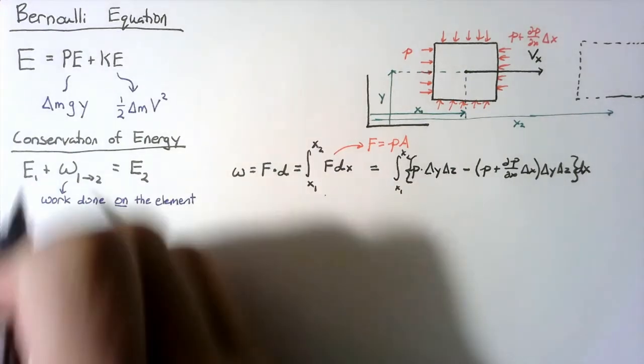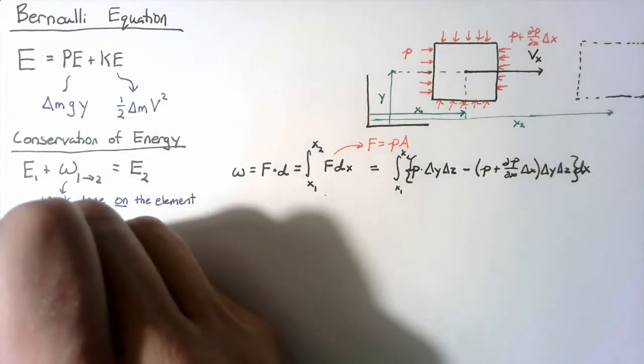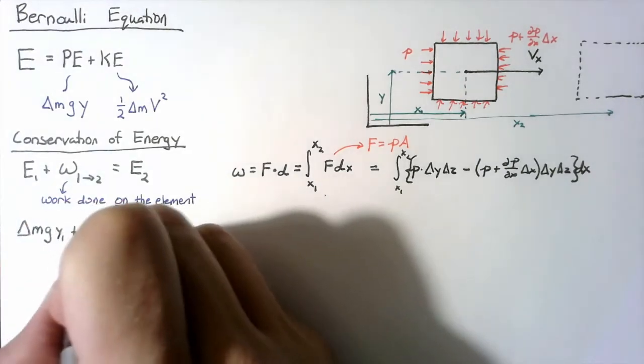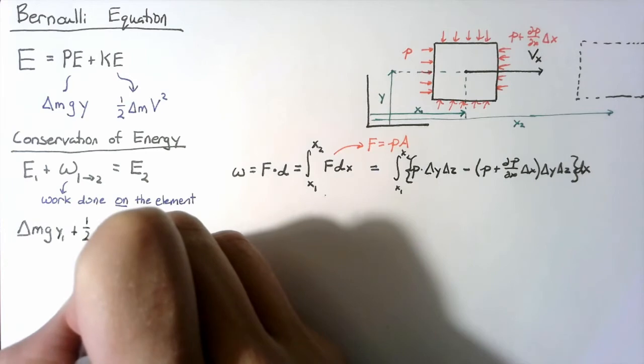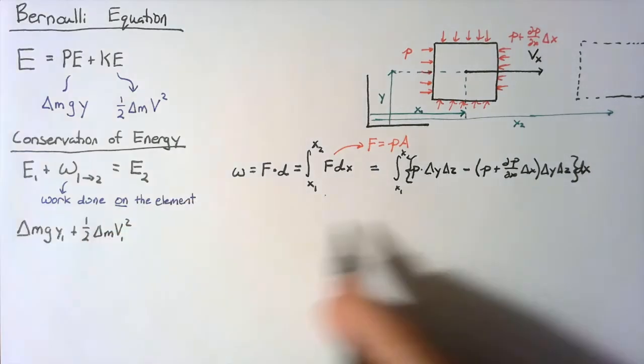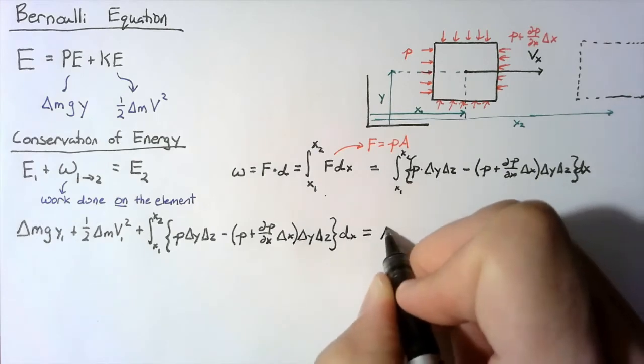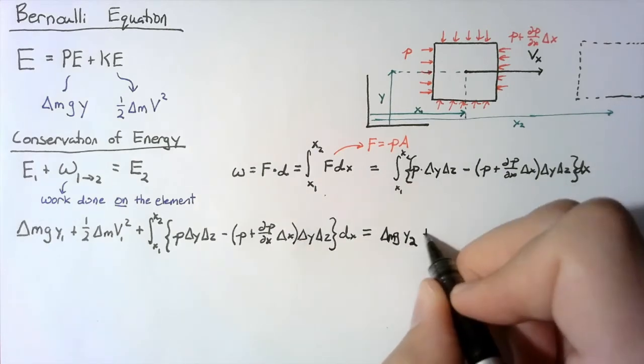For state one, the potential energy is just going to be delta m g y1. The kinetic energy is going to be one-half delta m v1 squared. And then I can copy out all of this work that's done, and that's going to be equal to the energy for state two.